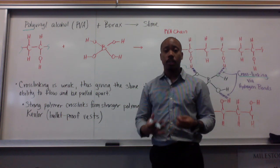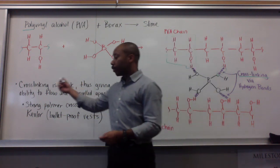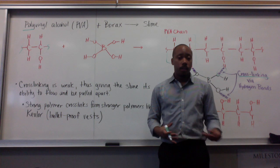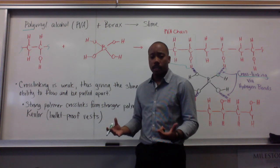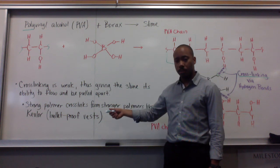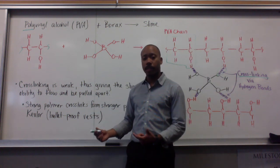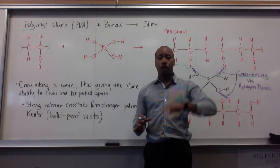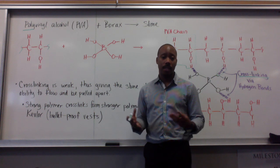Cross-linking is very important. It determines how strong or how delicate something is, or its function. For this situation, cross-linking is weak, giving the slime its ability to flow and be pulled apart — that's why the slime is flexible. But strong polymer cross-links form strong polymers. For example, Kevlar is a polymer that makes up bulletproof vests. Teflon is also a polymer — it was used in bulletproof vests in the past, and it also makes up the black coating you see on pots and pans.